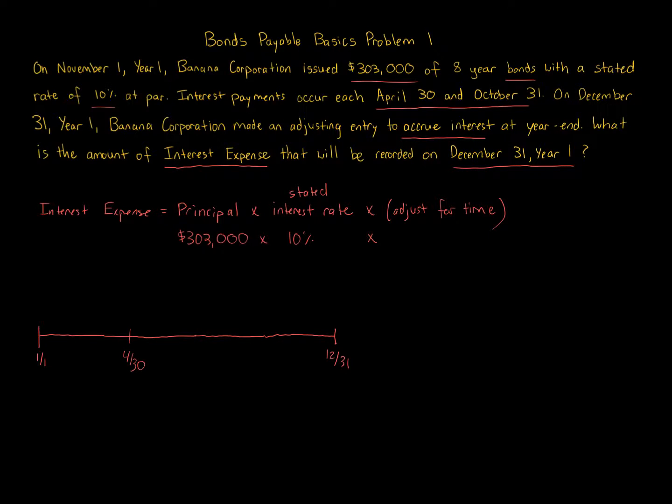And then they also occur on October 31st. So the idea is that there's six months and six months period of time. So we have six months here between May 1st and October 31st. And then we've got two months here from November 1st to December 31st. And then we have from January 1st to April 30th, we have four months.